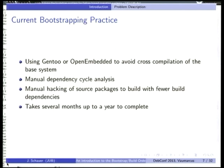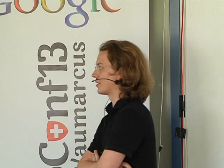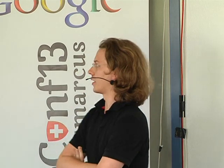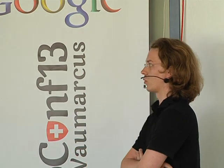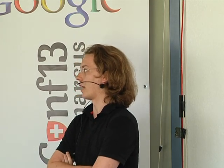The current bootstrapping practice is that people use Gentoo OpenEmbedded to avoid cross-compilation, because that's not working very well right now, and build a minimal system to compile on. They do dependency analysis manually — I heard from people that they were doing that on paper and drawing it. After finding those cycles, they manually hack source packages so that they can build with fewer build dependencies than they would normally need, thus breaking dependency cycles. That takes loads of time, and the goal of the Google Summer of Code was to have that automated.